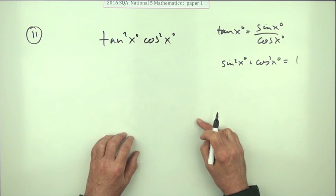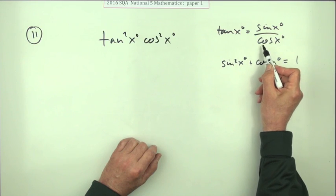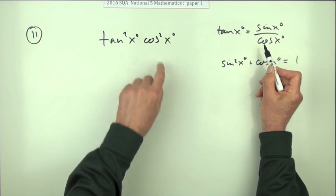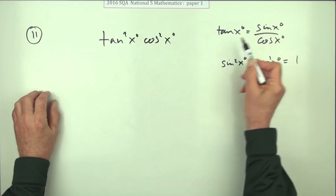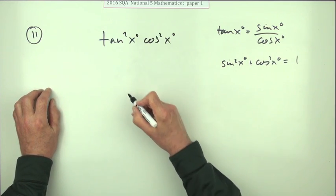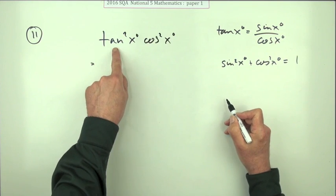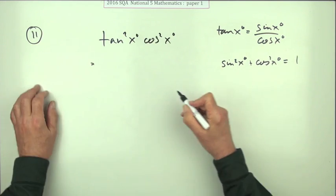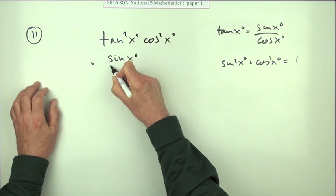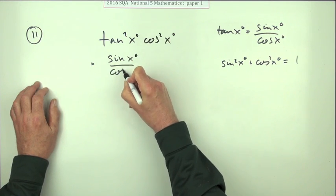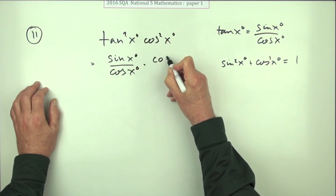Well, tan would be useful — I know tan is sine over cos, and I've got cos here, so I could get rid of that tan and get cos's in, which might do something useful. Tan is sine over cos, so I can replace tan with sine x over cos x. You don't need to put in the degree signs.